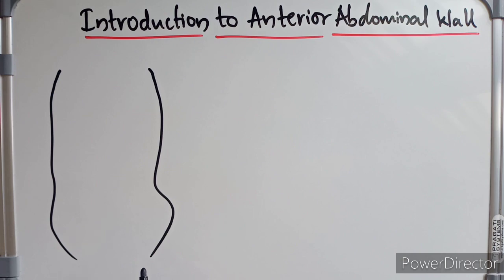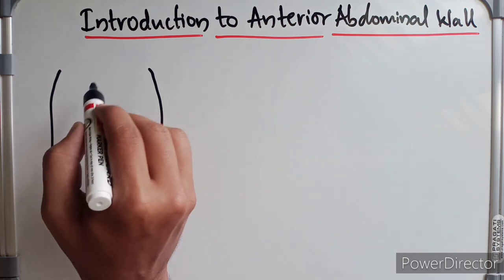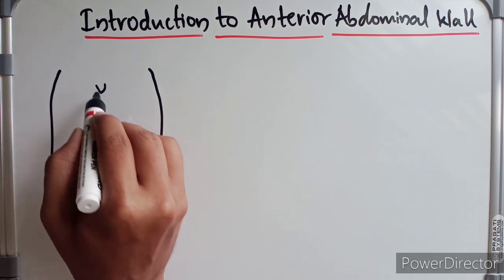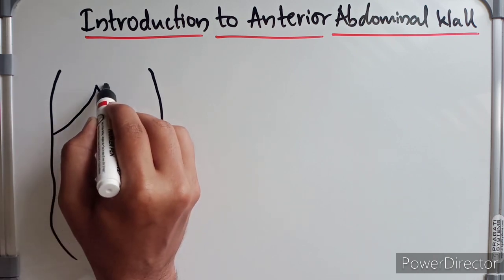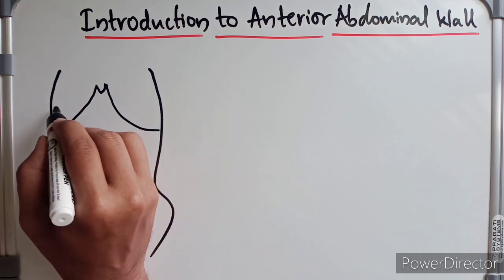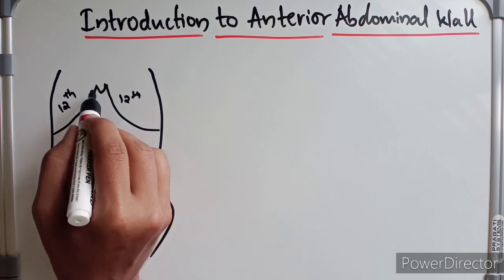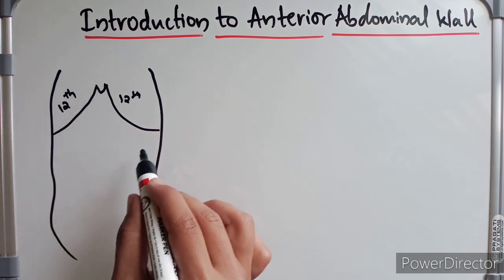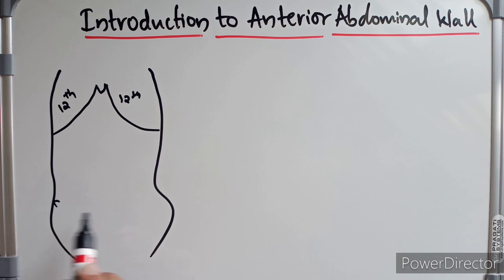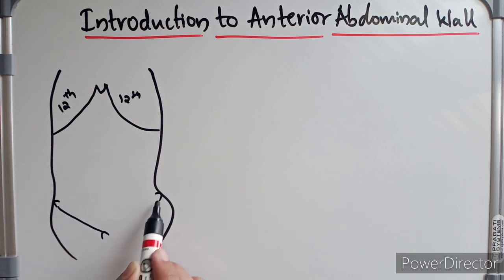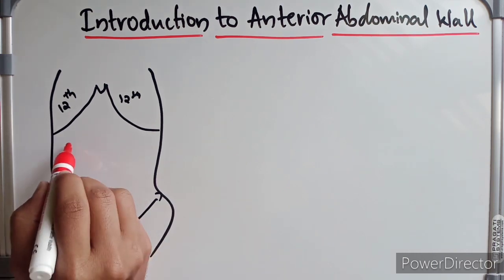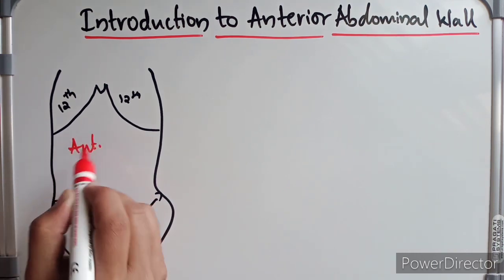The anterior abdominal wall is bounded superiorly by the xiphoid process and the right and left costal margins, and the twelfth rib on either side. The lower margin is formed by the anterior superior iliac spine of the hip to the pubic tubercle via the inguinal ligament.